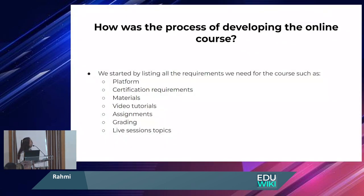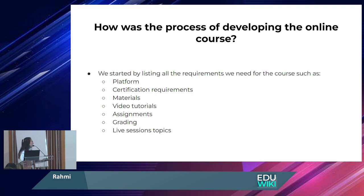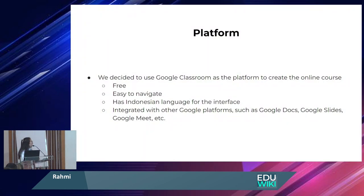So far we have organized 16 online courses. We start by listing all the requirements we need. The platform we use is Google Classroom at first because we thought it was the easiest and most accessible one. We also define the certification requirements — what participants need to do to fulfill all the requirements and get the certificate — the materials, the video tutorials that we had to create in a short period of time, and also the assignments, grading, and some live sessions we organize to connect more with the participants.